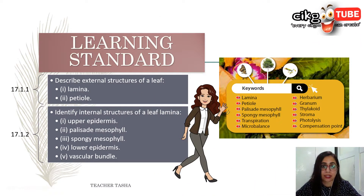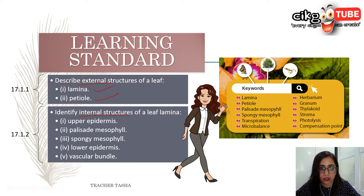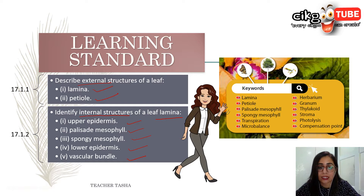The learning standard is to describe the external structures of a leaf. We have two structures here: lamina and petiole that we have to look into. We are also going to identify the internal structures of a leaf lamina — the upper epidermis, palisade mesophyll, spongy mesophyll, lower epidermis, and vascular bundle. You have already learned this in Form 4, Chapter 2: Cell Organization.